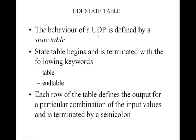The behavior of a UDP is defined by a state table. The state table begins and is terminated with the keywords 'table' and 'endtable'. Each row of the table defines the output for a particular combination of input values and is terminated by a semicolon.